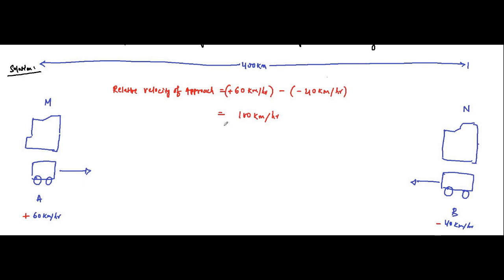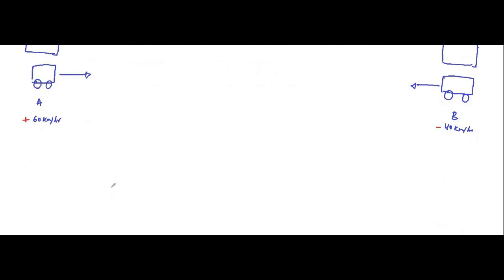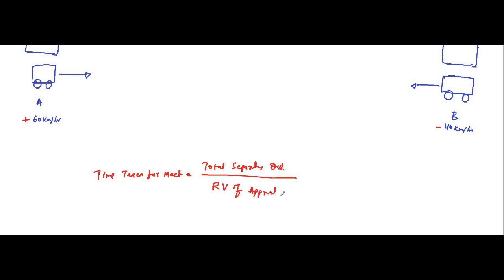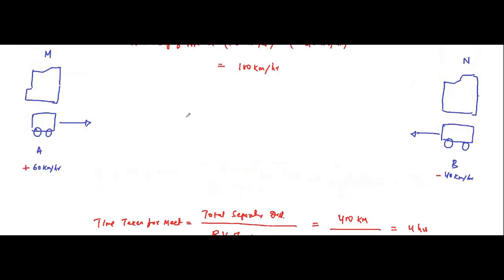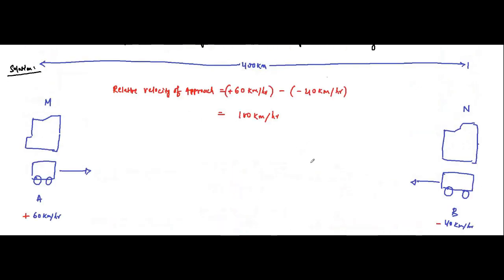The relative velocity is 100 kilometers per hour. The time taken for both of them to meet each other will be the total separation distance divided by the relative velocity of approach. This is equal to 400 kilometers divided by 100 kilometers per hour, which equals 4 hours. So with both of them moving at their respective velocities, it will take 4 hours for both of them to meet somewhere.